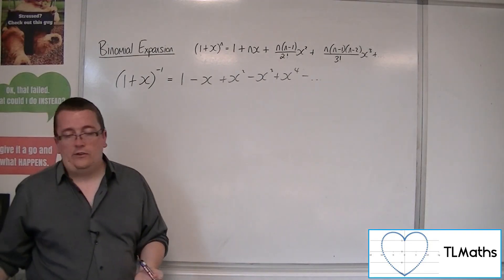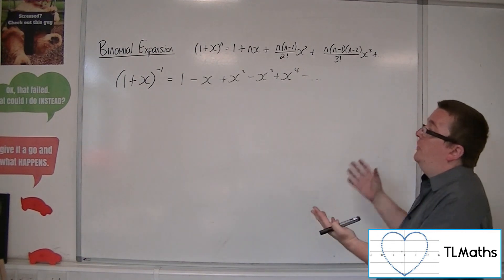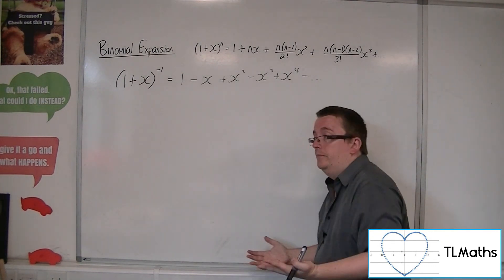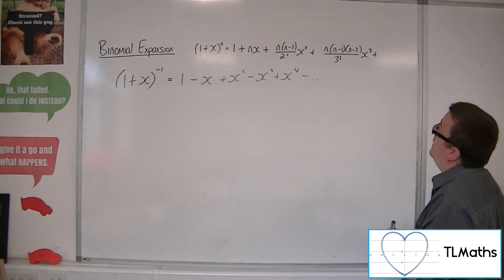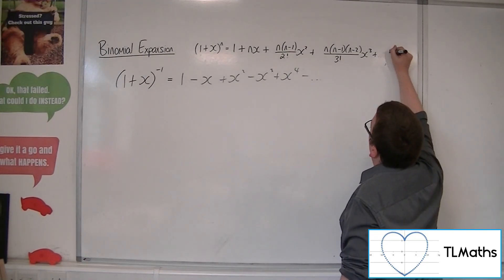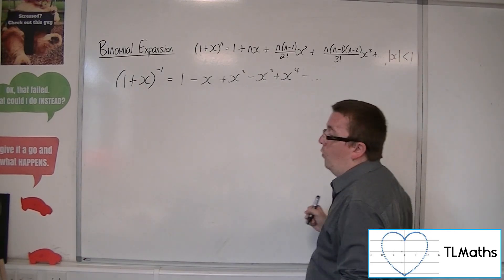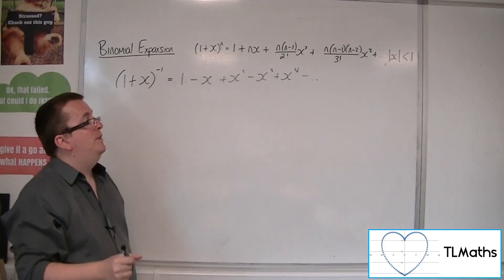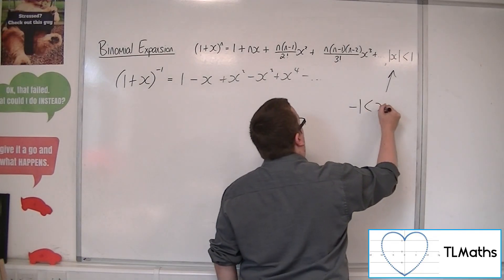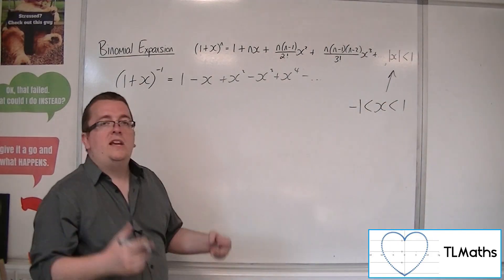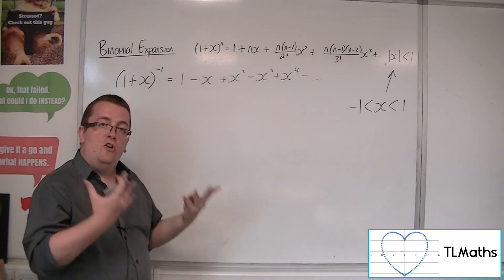So, what values of x it works for, it's valid for. What values of x can I substitute into the left-hand side and the right-hand side and I get the same thing? So, for this and for this, this 1 plus x to the n, we must say that the modulus of x must be less than 1. It only works when x is between, because this is synonymous with saying that x is between minus 1 and 1. If it goes outside of that, then it doesn't work anymore. It's not valid for that.